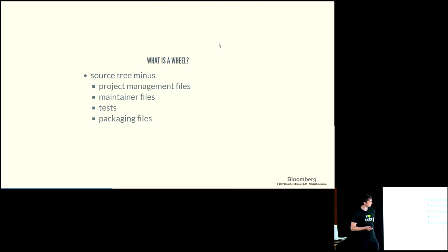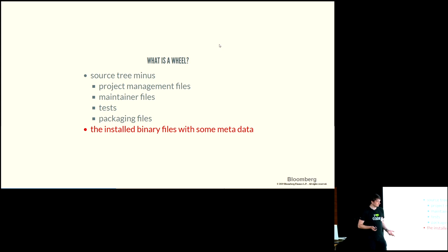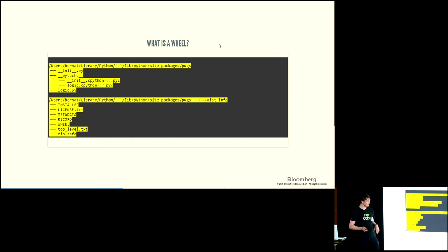A wheel, on the other hand, is where you no longer care about the tests — the only thing you care about is the binary files and business logic. A wheel is essentially a one-to-one mapping of exactly what gets put into the site-packages folder.